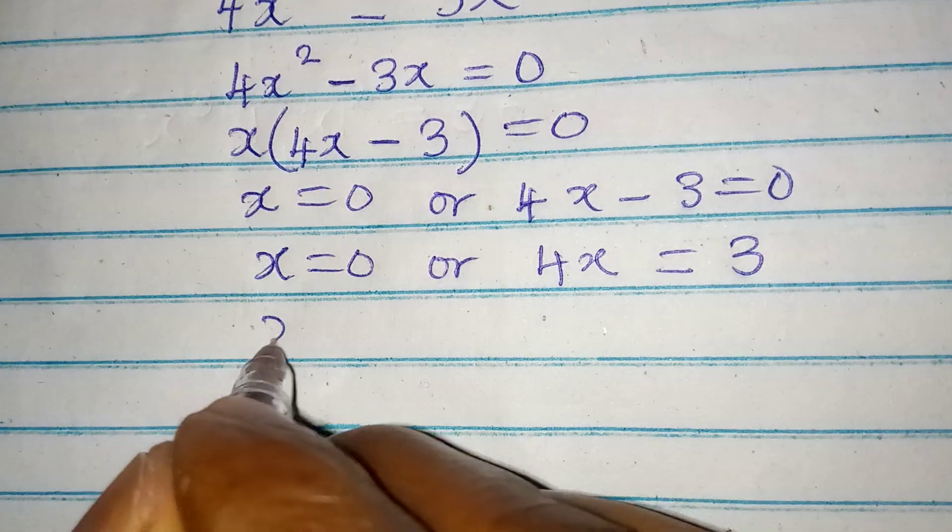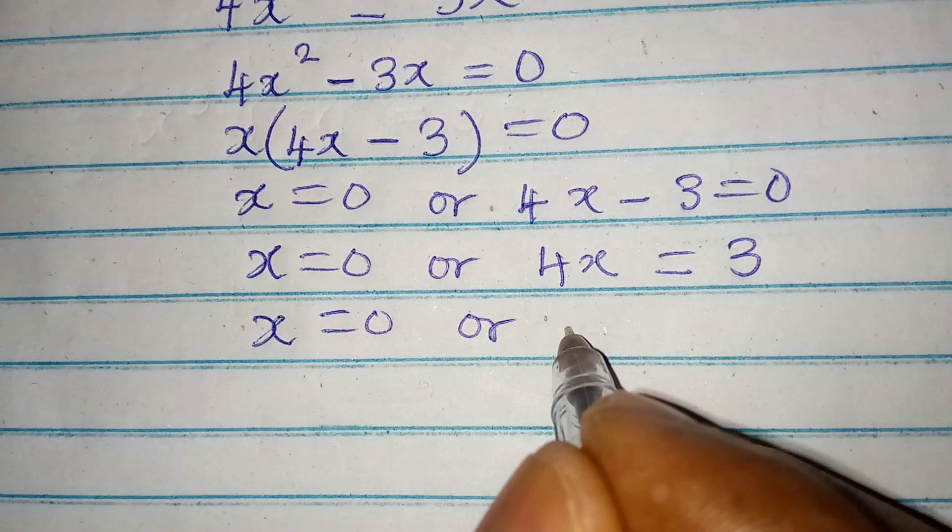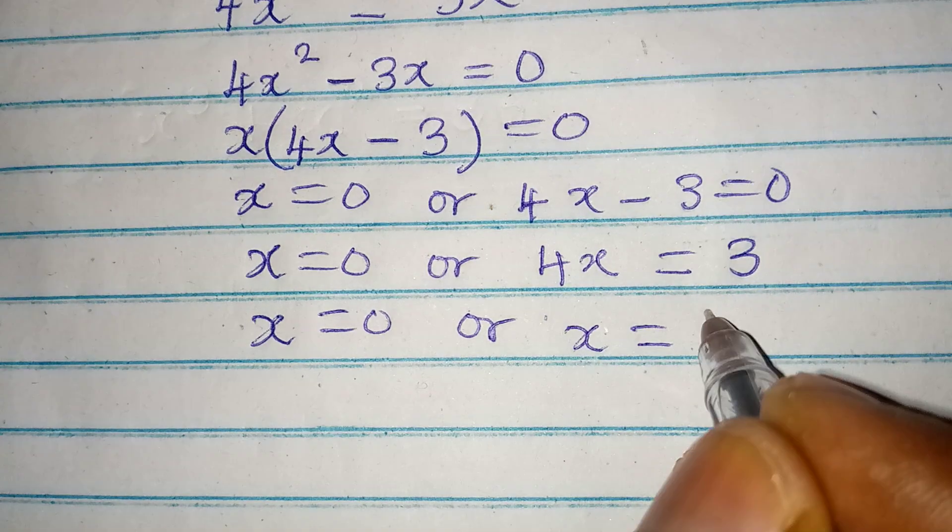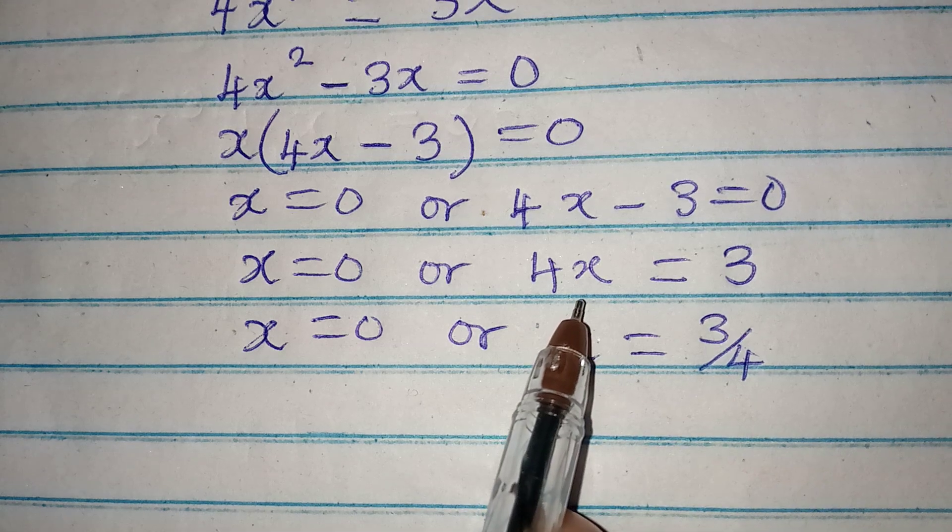Now x remains 0, or from here x will be equal to 3 over 4, that is dividing both sides by the coefficient of x.